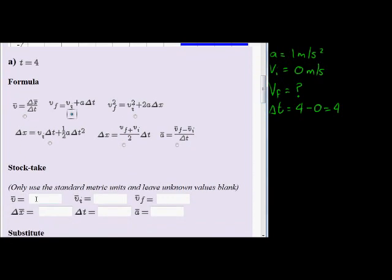Now we do our stock taking. Remember, use only standard metric units and leave unknown values blank. We don't have average velocity. We have initial velocity is zero. Future velocity, that's the one we want to calculate. The change in displacement we don't know. Change in time we do know. Acceleration we know as one meters per second.